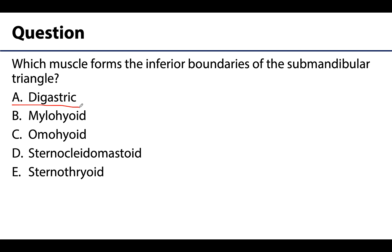Remember, both the anterior and posterior bellies of the digastric muscle form the inferior boundaries of the submandibular triangle, with the superior boundary being the mandible.